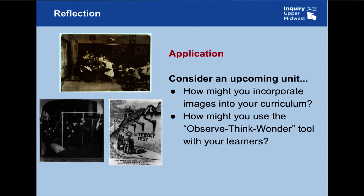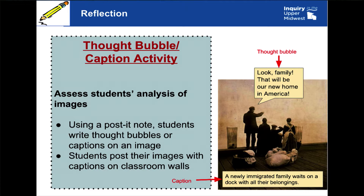There's a great assessment that you can use with images to get kids really digging deep into what they know about an image and what it reflects about a time period. This is called the thought bubble and caption activity to assess students' analysis of images. Using a post-it note, students will write either a thought bubble or a caption and stick it onto an image. For this image of a family at Ellis Island, they might say, 'Look family, that will be our new home in America.' Or they might write a caption that says, 'A newly immigrated family waits on a dock with all of their belongings.' After students have written the thought bubble or caption, they post their images with the captions all around the classroom walls so people can see what other students have said about their images.